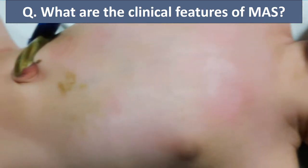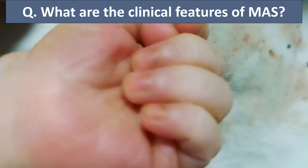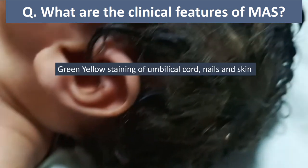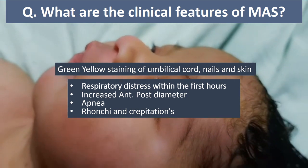What are the clinical features of meconium aspiration syndrome? Green-yellow staining of the umbilical cord, nails, and skin will be present. If the baby has developed meconium aspiration syndrome, signs of respiratory distress — including tachypnea, grunting, and retractions — will be present within the first hour of life. Increased anteroposterior diameter of the chest will be seen due to hyperinflation and emphysema from partial airway obstruction. The child may develop apnea, and on auscultation, rhonchi and crepitations will be audible.